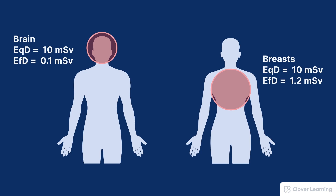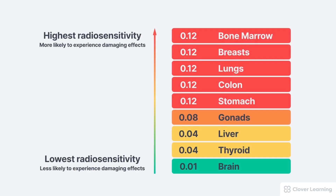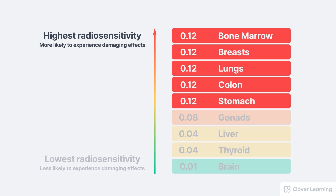This is because the breasts are more sensitive to radiation than the brain. If the entire body was exposed to the same dose of radiation, the tissues most likely to develop cancer would be those with the highest radiosensitivity, represented by having a high tissue weighting factor. That would include the bone marrow, the breast, the lungs, the colon, and the stomach, which all have a tissue weighting factor of 0.12.